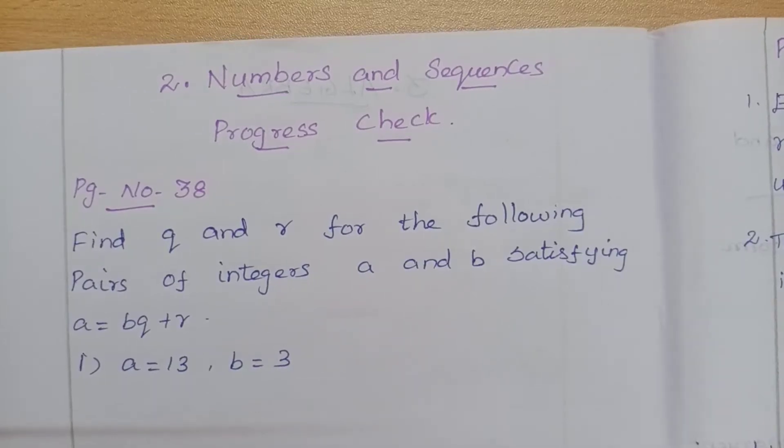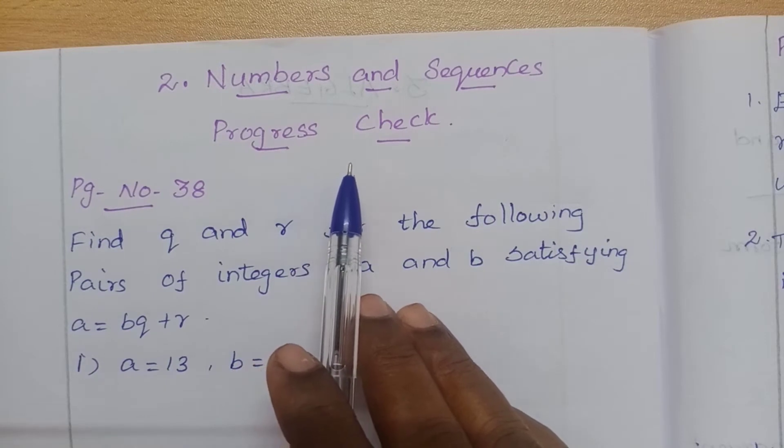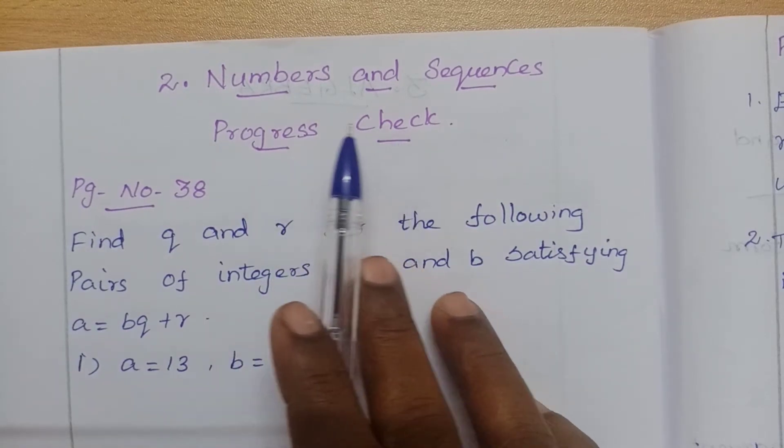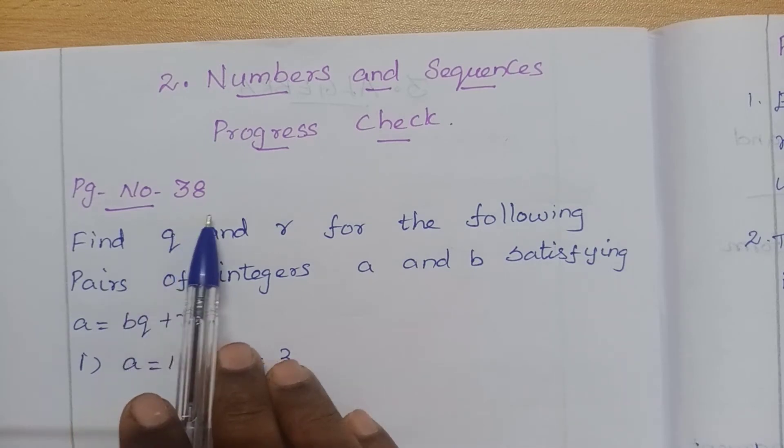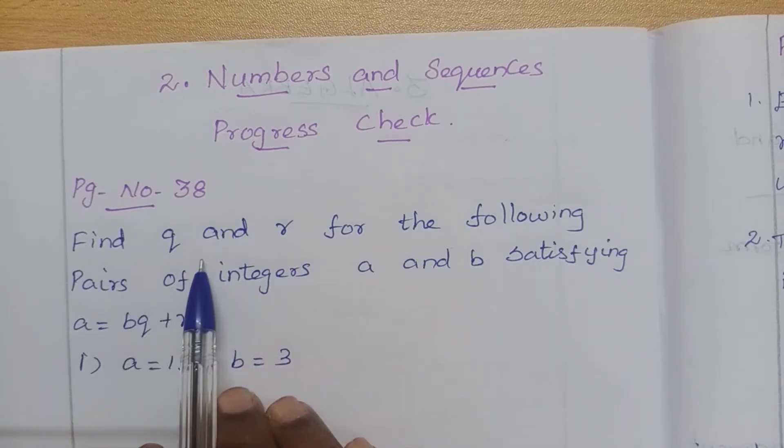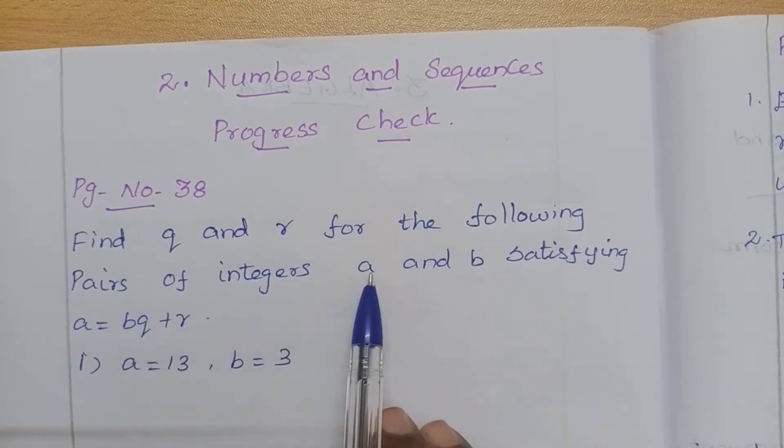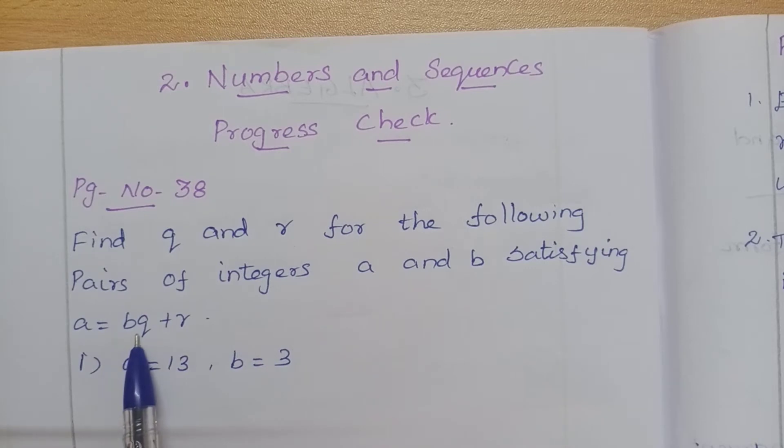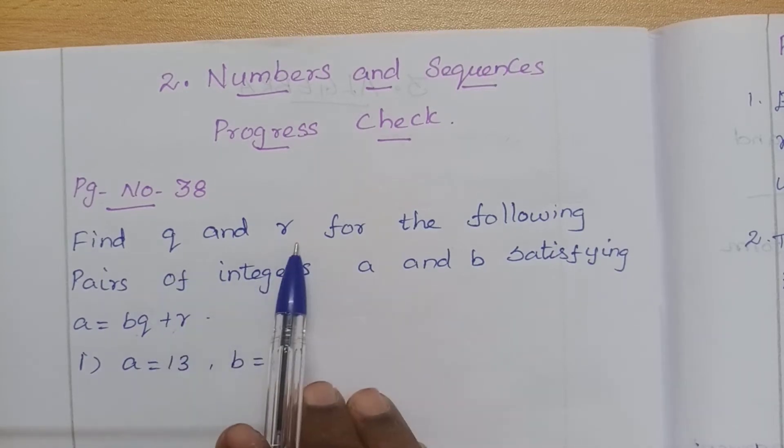Hello students, today we are going to see progress check from lesson 2, page number 38. Find Q and R for the following pairs of integers A and B, satisfying A equal to BQ plus R. So we should calculate this Q and R value.